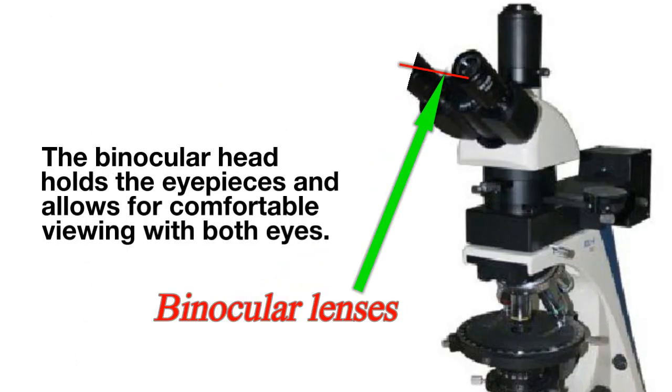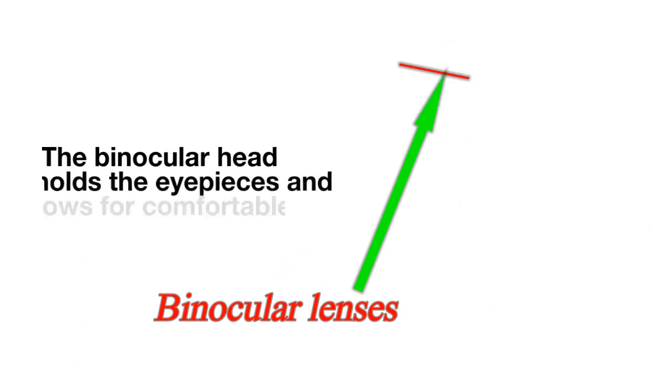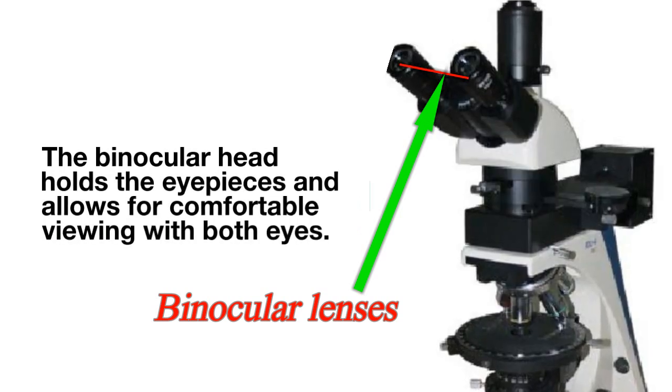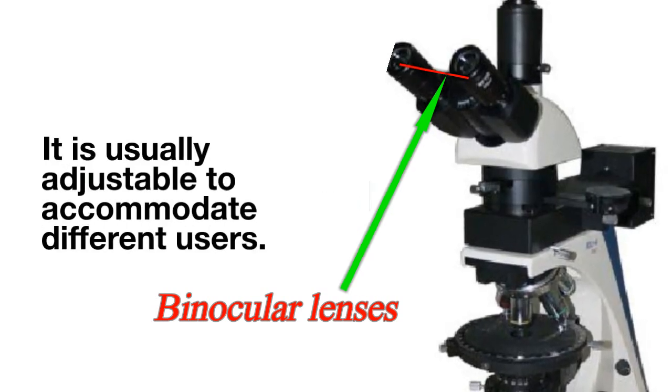Binocular head. The binocular head holds the eyepieces and allows for comfortable viewing with both eyes. It is usually adjustable to accommodate different users.